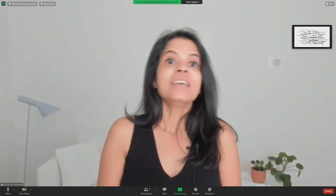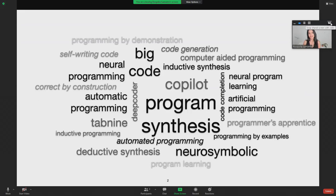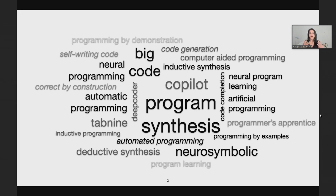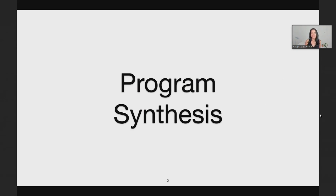So let me get started. There has been a lot of buzz recently in academia and in industry in the last decade or so about automating programming, generating code that is correct by construction, program synthesis, neural programming, AI, pair programmers, and so on and so forth. While we may not all agree on what these exactly mean or manage to accomplish, for this talk, let me just refer to all of these buzzwords and efforts as program synthesis.